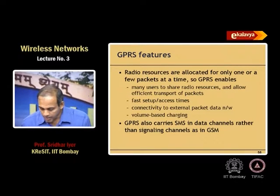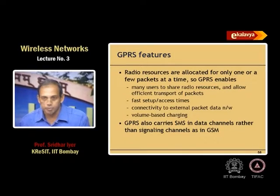GSM had huge deployments already. The requirement was to move to on-demand packet-based allocation. We need hardware and software patches. In GPRS, radio resources are allocated only for a few packets at a time. When you make a voice call in a GPRS system it works like normal GSM with periodic slot allocation. This on-demand allocation is only for data. GPRS also enables volume-based charging and carrying SMS in data channels.